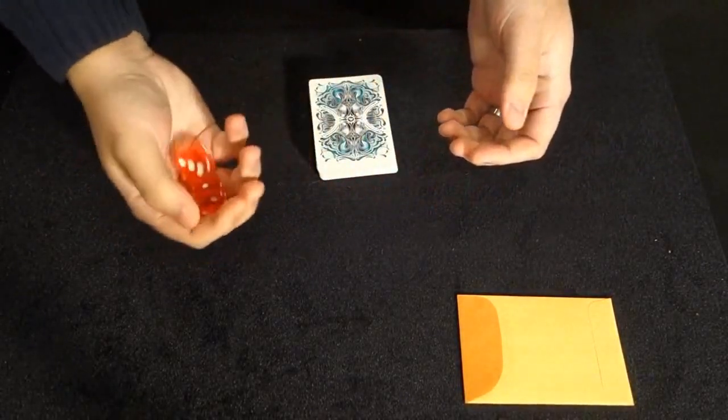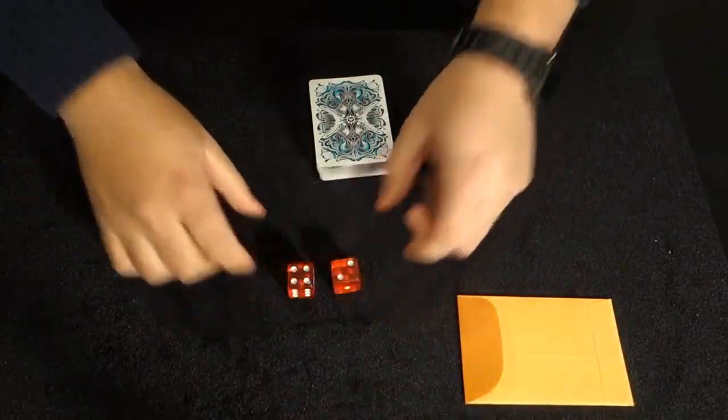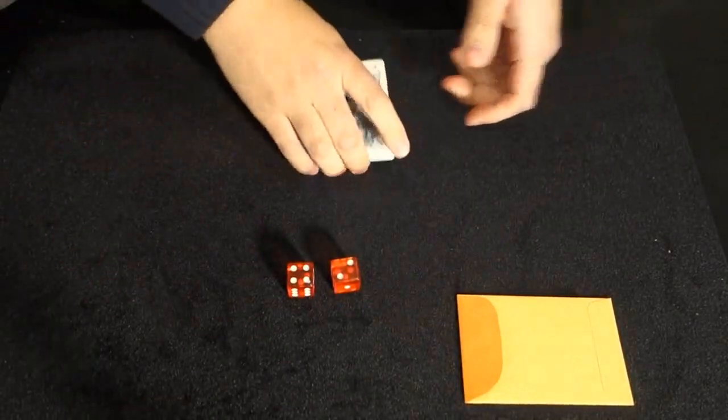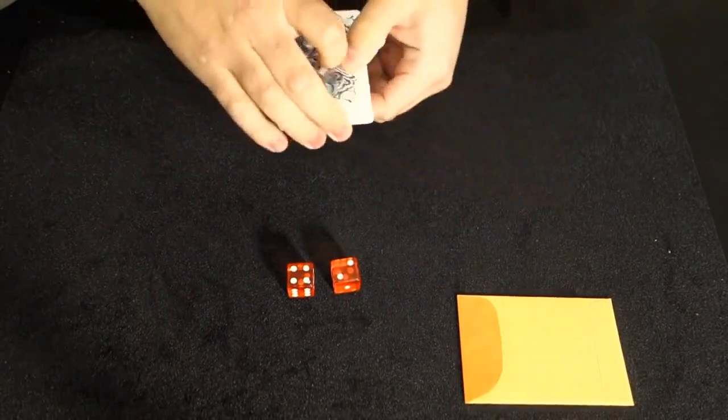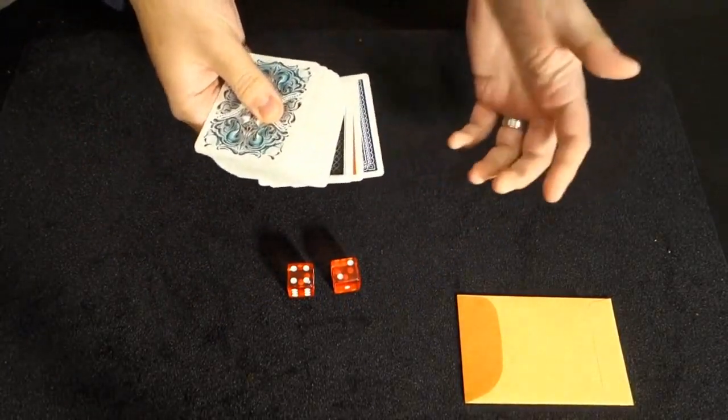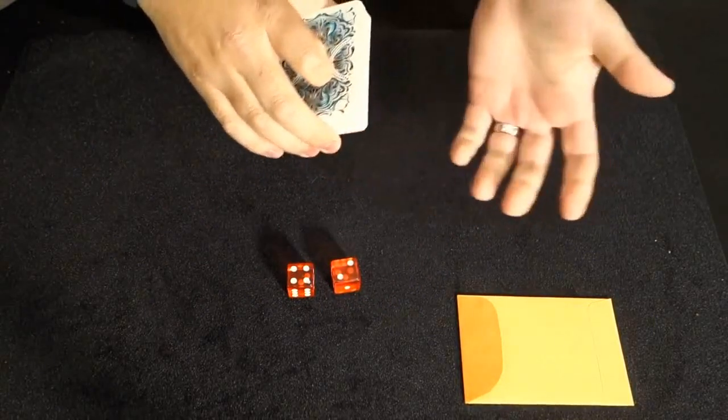Okay? So give the dice a roll. And we have a six. Now, would you like the six card from the top of the deck? Or would you like to have the six card from the bottom? It's totally up to you. Top? Sure.